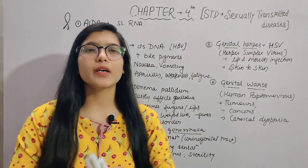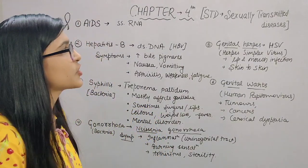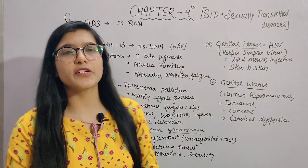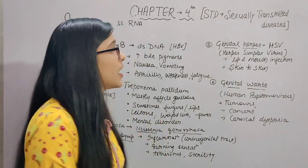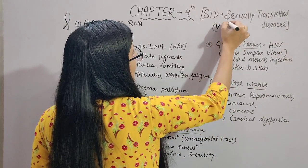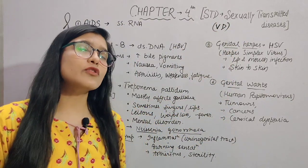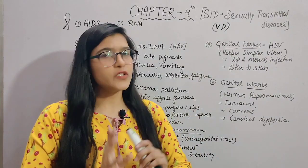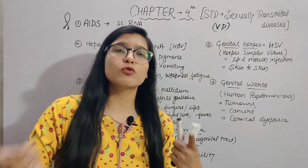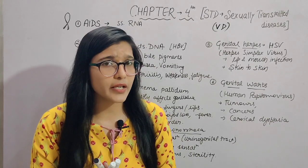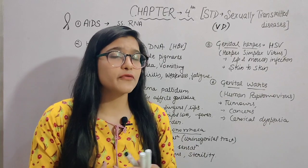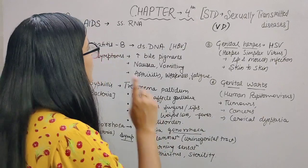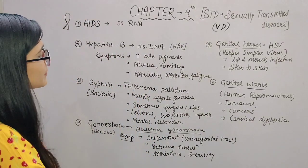Now we will talk about our next topic, which is sexually transmitted diseases. The sexually transmitted diseases, which are called VD or venereal diseases — we will discuss various different diseases. As the name suggests, these diseases are transmitted by sexual contact. If an individual is infected and another individual has sexual contact with them, the disease could be transmitted to the other individual. There are many examples: AIDS, Hepatitis B, Syphilis, Gonorrhea, and Trichomoniasis.